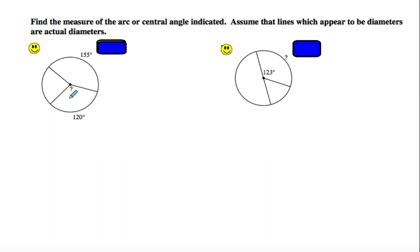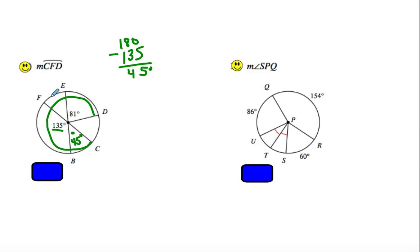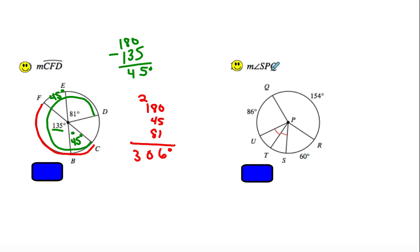If the arc is 120, the angle is 120. If this is 123, the angle and arc are also 123. To find arc CFD: we know 35 plus whatever this is equals 180, so we do 180 minus 135, which gives a 45-degree angle. Since that's 45 degrees, this vertical angle is also 45 degrees. We know this little piece is 180. So we do 180 plus 45 plus 81, giving us 306.